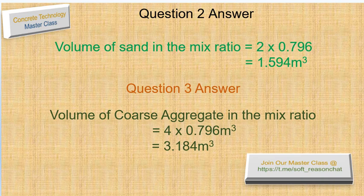This is how to calculate the number of bags of cement, the volume of sand, and the volume of coarse aggregate for the construction of a reinforced concrete tank stand with a total concrete volume of 5.578 cubic meters. Thank you for staying with this presentation — please like, subscribe, and share. Stay tuned and stay safe.